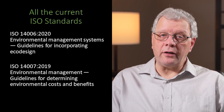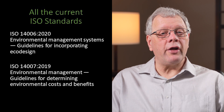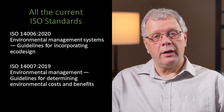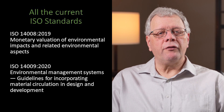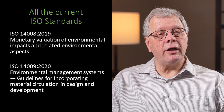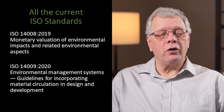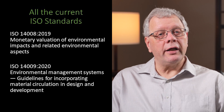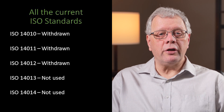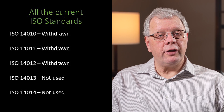ISO 14006 provides guidelines for incorporating eco-design. ISO 14007 covers guidelines for determining environmental costs and benefits. ISO 14008 provides a framework for the monetary valuation of environmental impacts and related environmental aspects. ISO 14009 covers guidelines for incorporating material circulation in design and development. ISO 14010, 14011 and 14012 have all been withdrawn, having been replaced by ISO 19011.